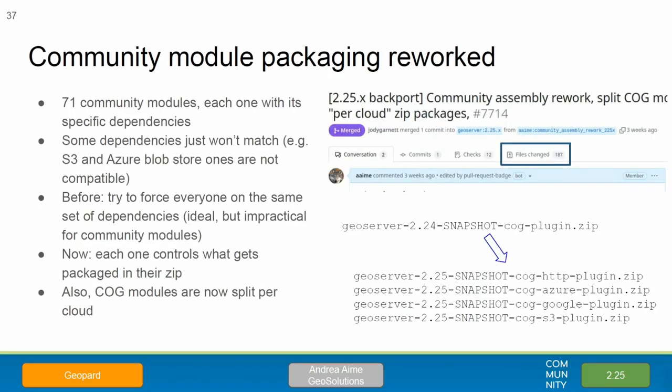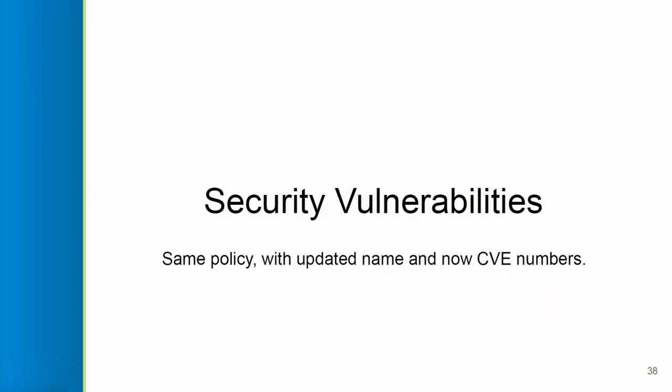We're reworking how community modules are packaged in an effort to separate their dependencies, because there are so many and sometimes they have incompatible dependencies. We did this to improve the COG plugin — we now have HTTP, Azure, Google, and S3 plugins separated depending on the type of cloud you're targeting, and we reworked all of them in the process.